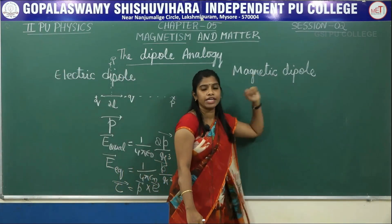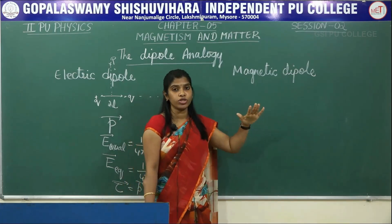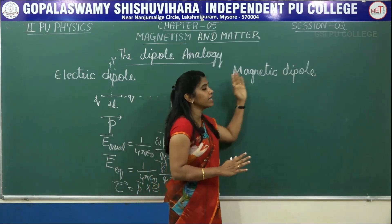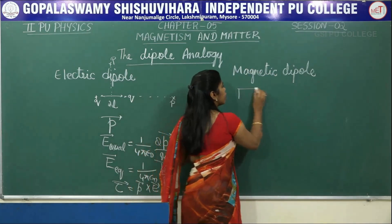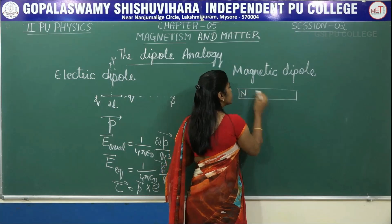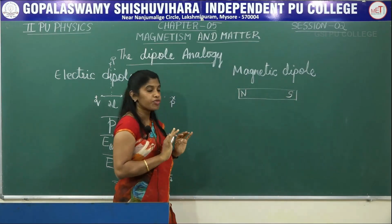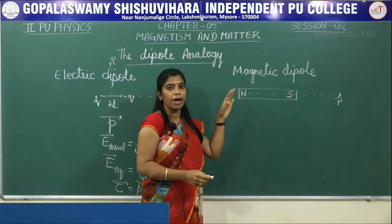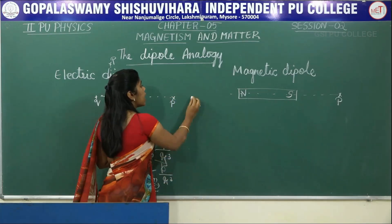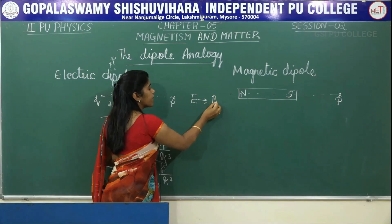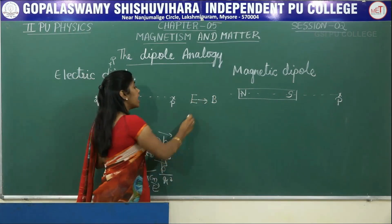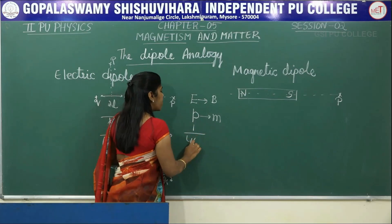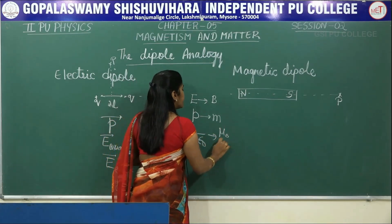Now coming to the magnetic dipole. In the previous session I had already told you that magnets never come in monopole — that is, magnetic monopoles never exist. Only the magnetic dipole exists. So if I have a bar magnet, it has two poles: one is north and another one is south. Now if I draw an axis on this bar magnet and take a point P where I have to find the magnetic field, what I do is replace E by B, the electric field by magnetic field, the electric dipole moment by the magnetic dipole moment, and the constant 1/(4πε₀) by μ₀/(4π).